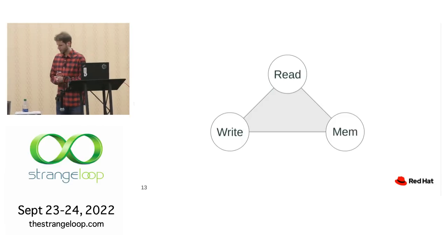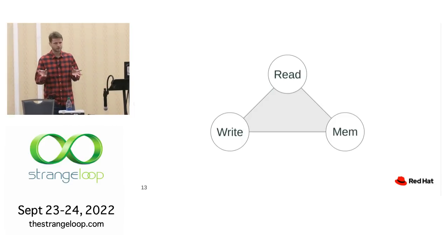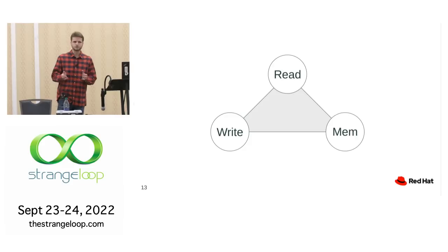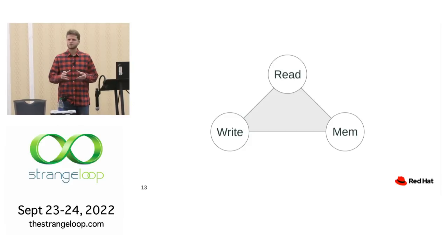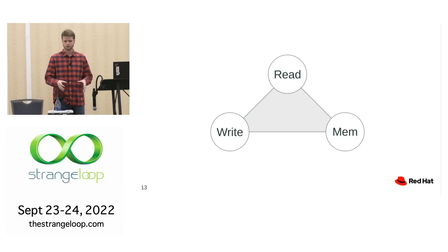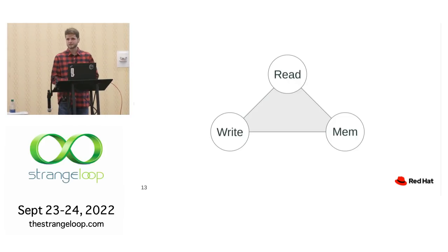So you might get the impression that B-trees are perfect — they've been ubiquitous for 40 years, not for nothing. But the question is why people are still trying to come up with something new. Why are people not satisfied with the current state of things?